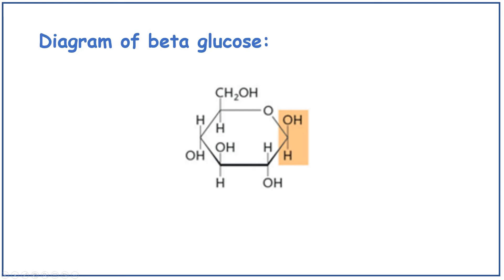For beta glucose, it's the other way round on carbon 1. The OH faces upwards on carbon 1, whereas the H faces downwards on carbon 1.